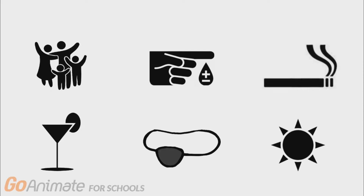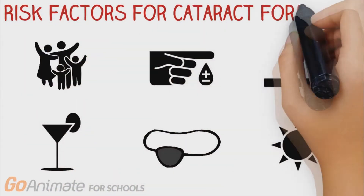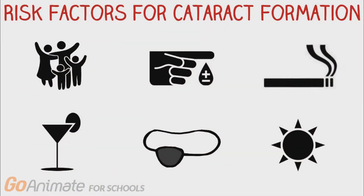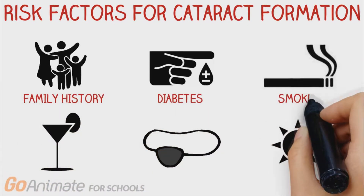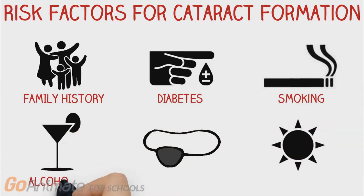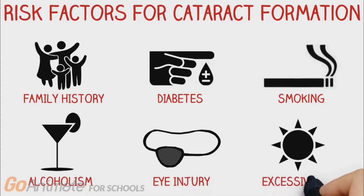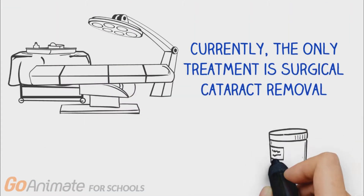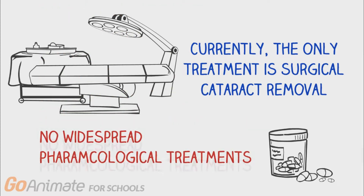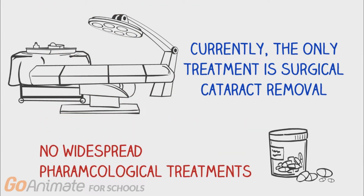There are many risk factors associated with developing age-related cataracts, such as family history, diabetes, smoking, alcoholism, eye injury, and excessive sun exposure. Currently, the only treatment is surgical cataract removal, and there are no widespread pharmacological treatments to prevent or delay cataract formation.